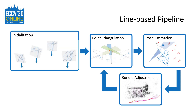We build upon their work and present the first full structure-from-motion pipeline to generate these maps with the same image content protection. Our main contribution consists of a new relative pose estimation method from line features and four views with known gravity. Additionally, we combine existing solvers for pose estimation and point triangulation from line features with an adapted bundle adjustment into a full reconstruction pipeline.